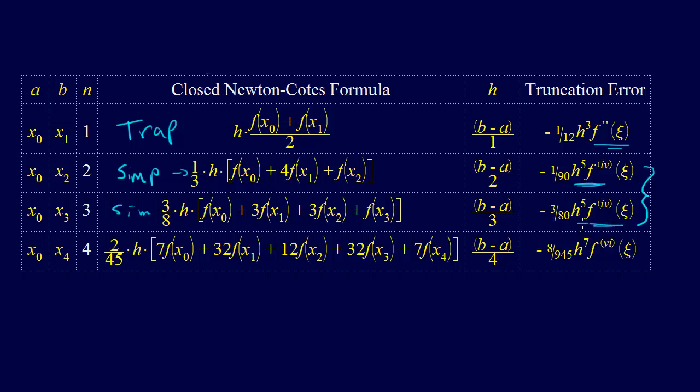So you might ask, why would I ever? It does get better though, so I can point out for Boole's rule it does get better. But then we've got sort of a lot of computation there. But you might ask then, why would we ever use Simpson's 3/8ths rule instead of Simpson's 1/3rd rule?